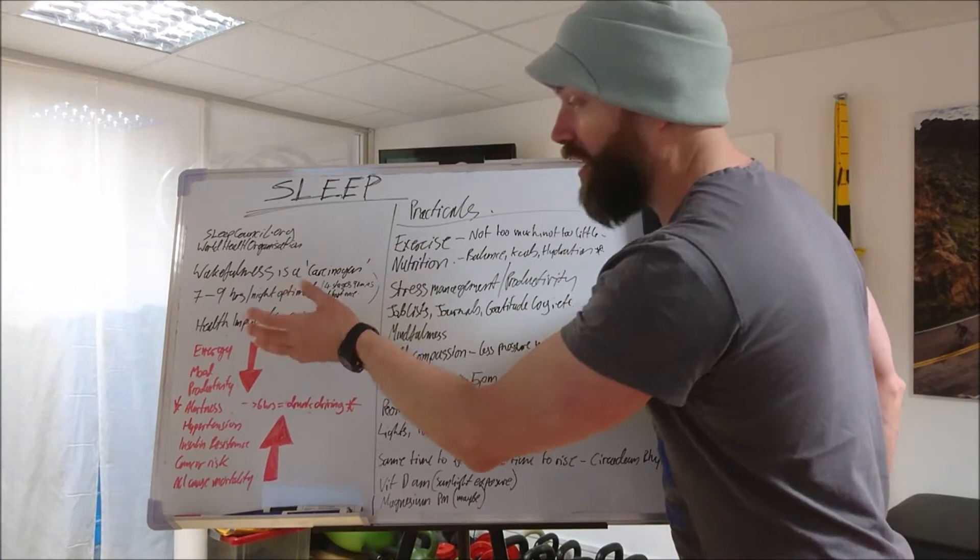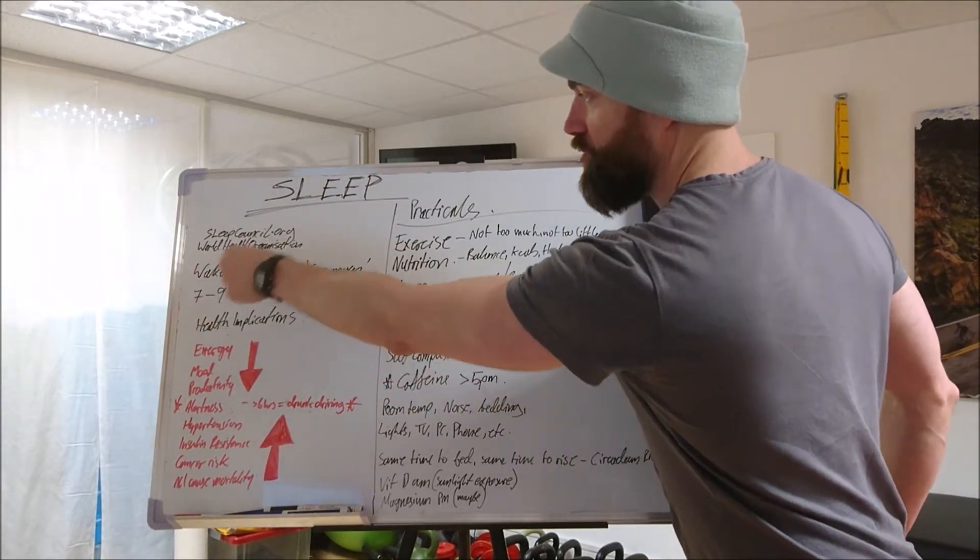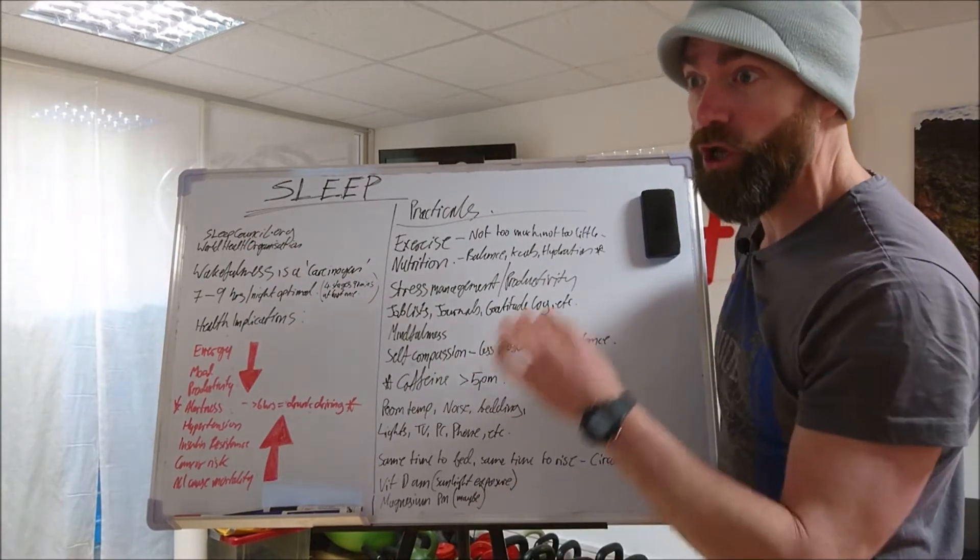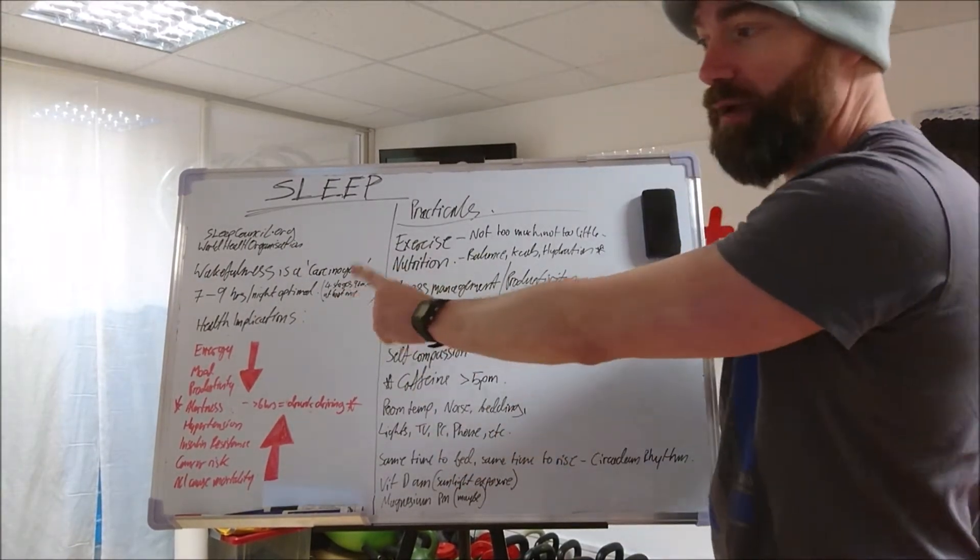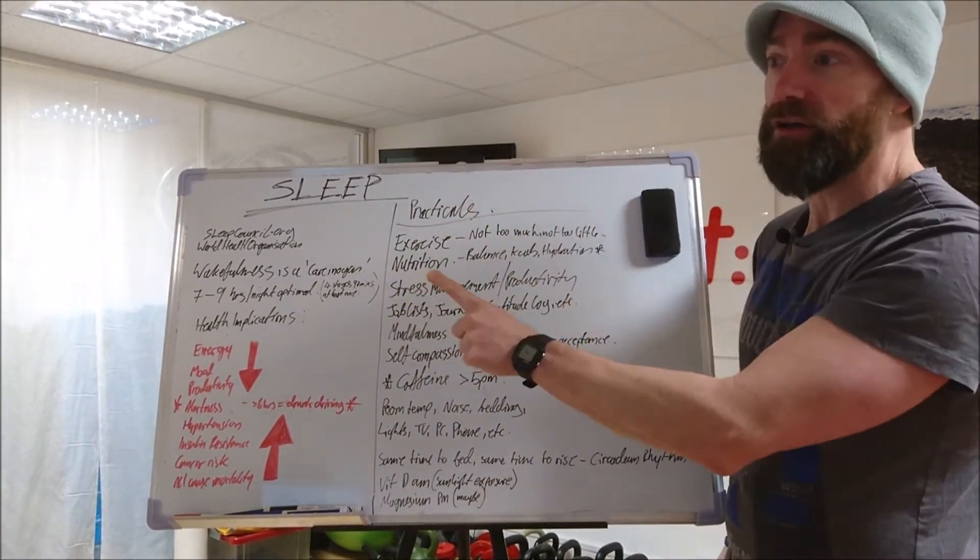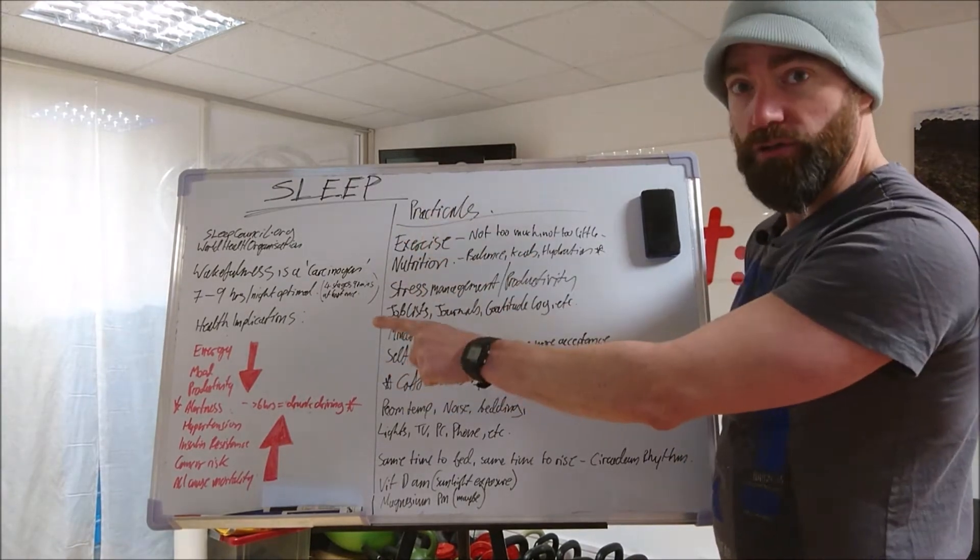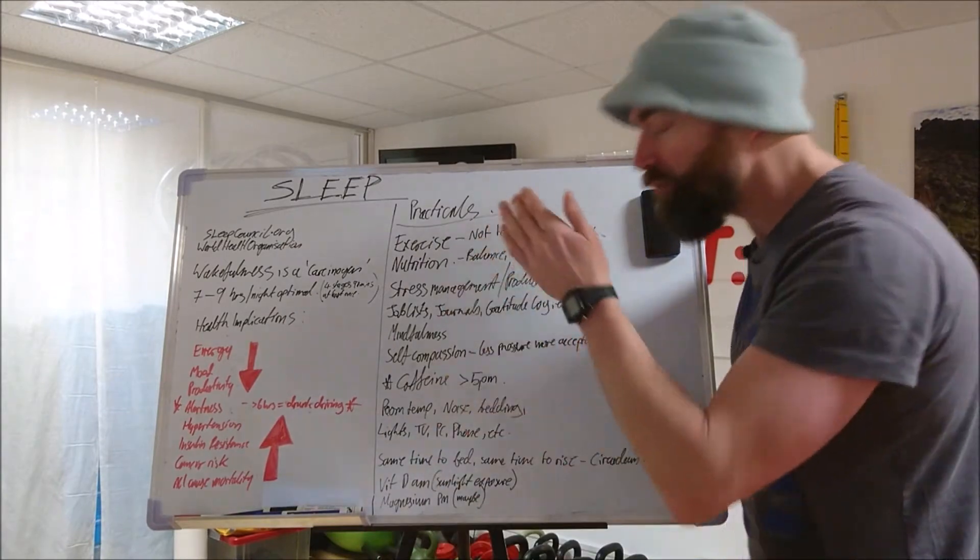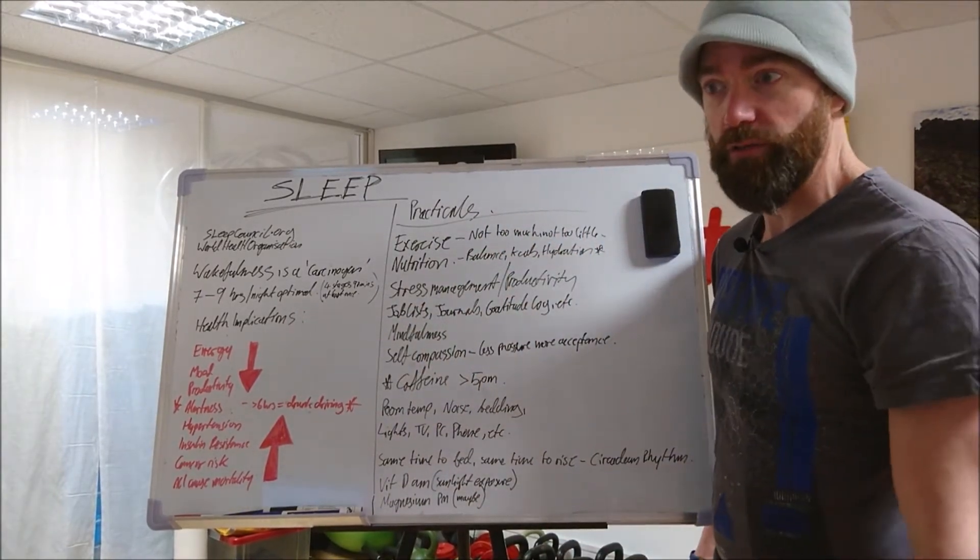So the optimal range of sleep, according to sleepcouncil, is seven to nine hours per night. And to put that into perspective, the average American gets less than six hours a night. And probably, I would say that's the same in the UK. Most of the people I know probably get less than six hours sleep per night.